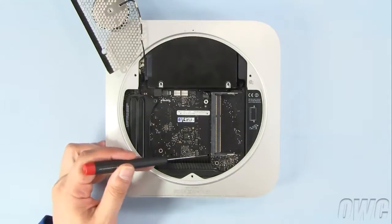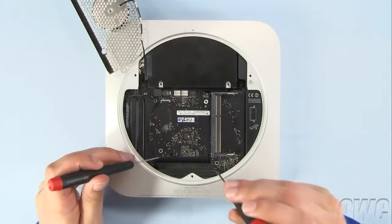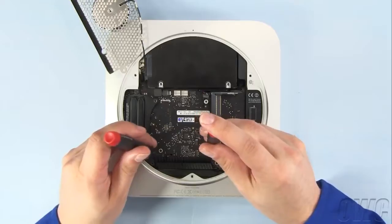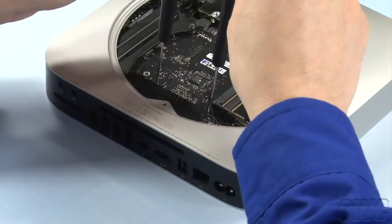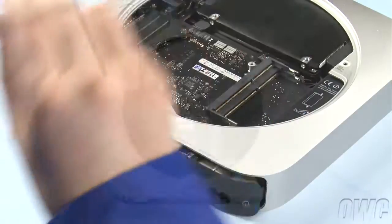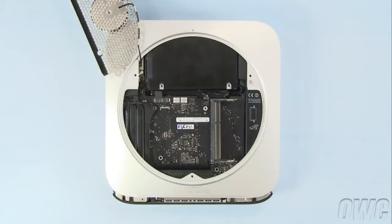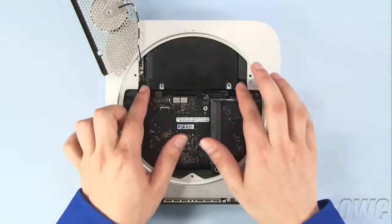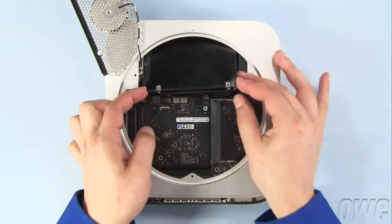Slide two thin screwdrivers into these two holes. Then, gently pull back on the screwdrivers to slide the logic board out of the back of the Mini. You don't need to remove it completely. We just need enough room to remove the drive from the top slot. You can then reach in and pull the hard drive out of the Mini.